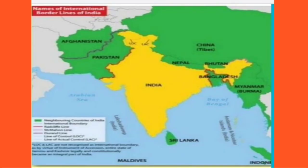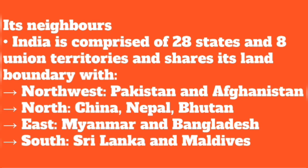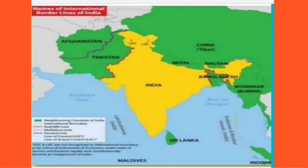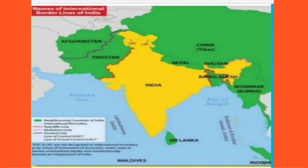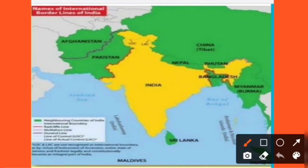India's neighboring countries are: to the north-west — Pakistan and Afghanistan; to the north — China, Nepal, and Bhutan; to the east — Myanmar and Bangladesh; to the south — Sri Lanka and Maldives. Sri Lanka is separated from India by a very narrow channel, the Palk Strait, and the Gulf of Mannar. Maldives lies to the south of Lakshadweep Islands.